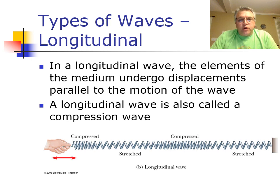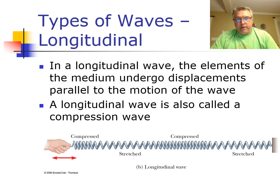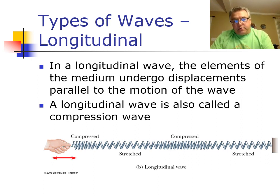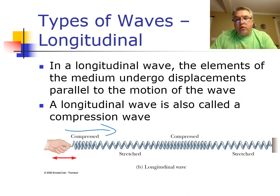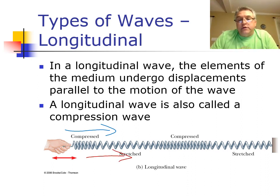The second type is called a longitudinal wave. In a longitudinal wave, the medium moves parallel to the direction of travel of the wave. If we bunch up one end of a spring and release it, the medium is disturbed in the horizontal direction, and the wave also travels in the horizontal direction — so they are parallel to one another.